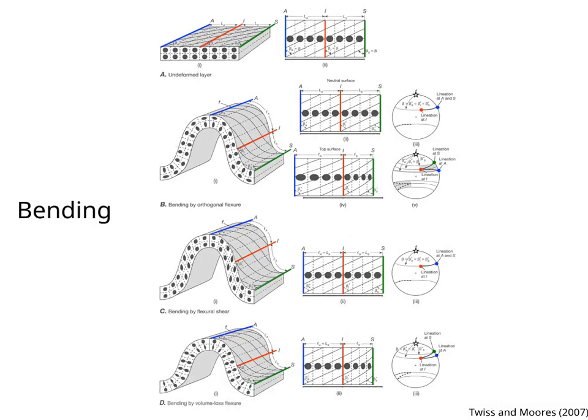This figure shows the strain distribution of class 1B folds formed by bending. The blue lines and points on the stereo net correspond to the hinge of the anticline, the red lines and points are the inflection line, and the green lines and points are the hinge of the syncline.